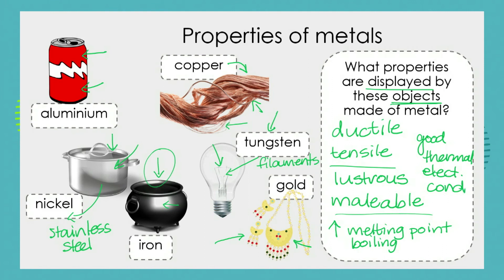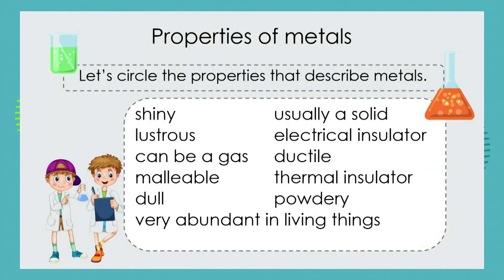How much have you learned today? Are you able to circle the properties that describe metals? Shiny and lustrous — yes, that relates to metals. Can be a gas — no, metals can't be a gas at room temperature. Malleable — yes, they can be hammered into sheets.